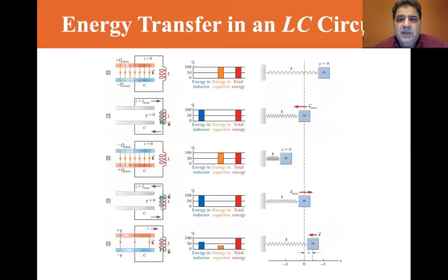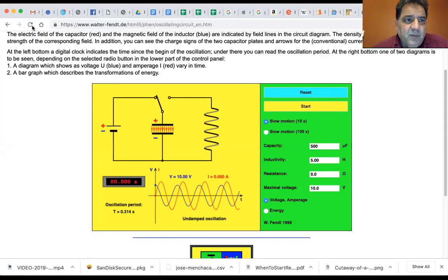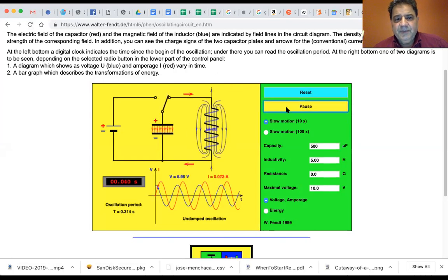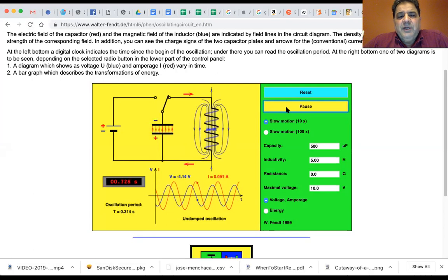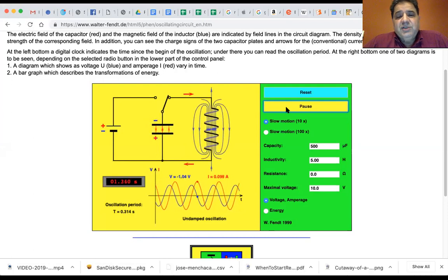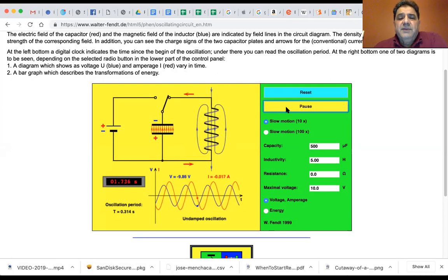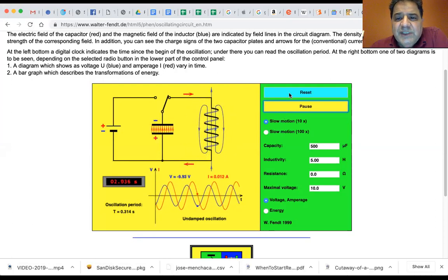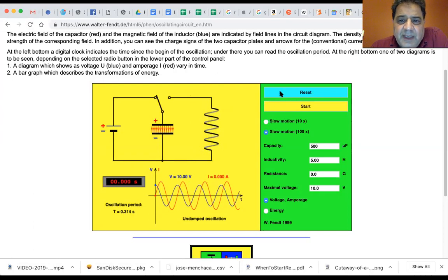Let's look at Walter Fent because he has a nice little demo here. Let's reset this and start this, and you can see it's in slow motion. But basically what's happening is you have the capacitor charging and discharging, and you see the magnetic field in the inductor building up and collapsing. Let's change it to super slow, reset it, and go to slow motion.